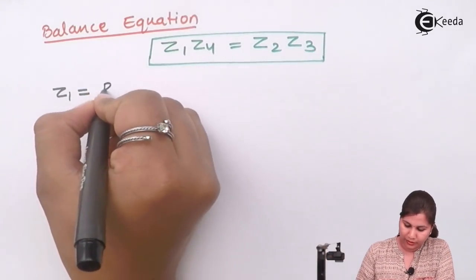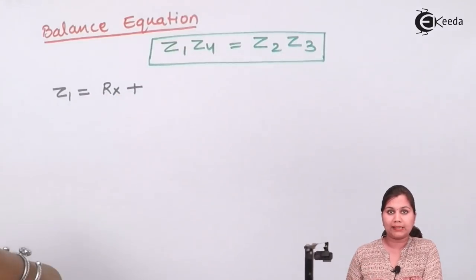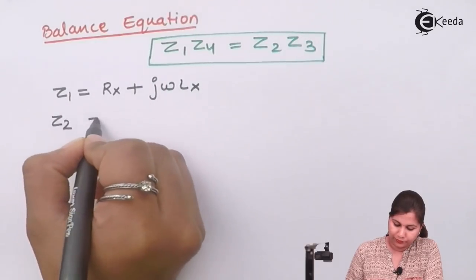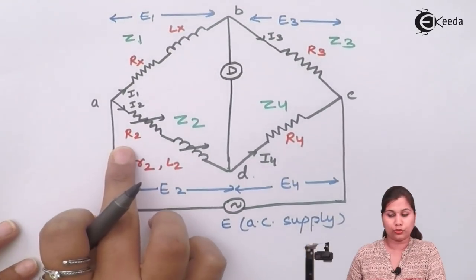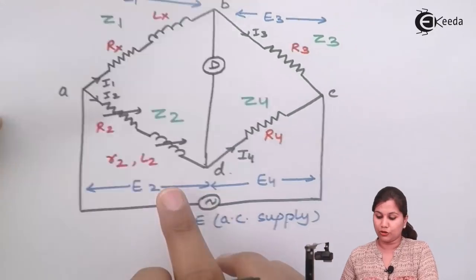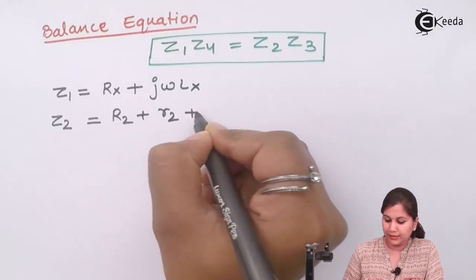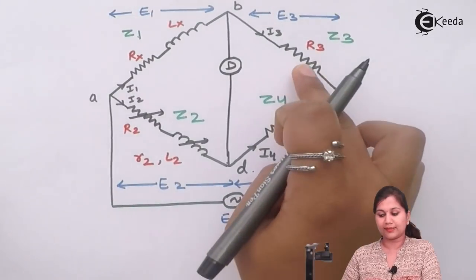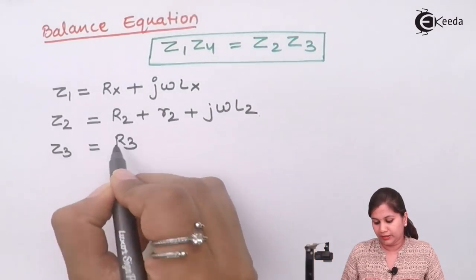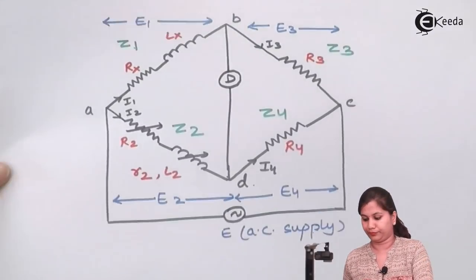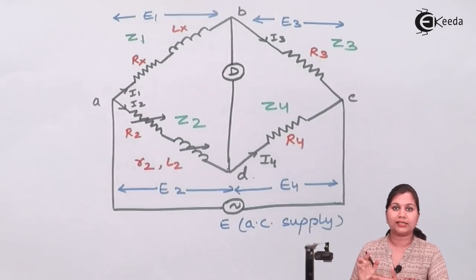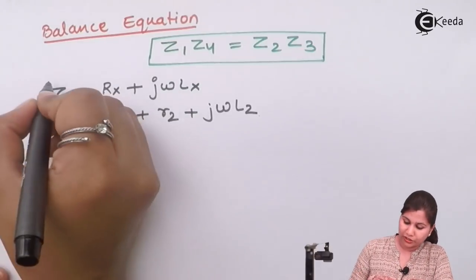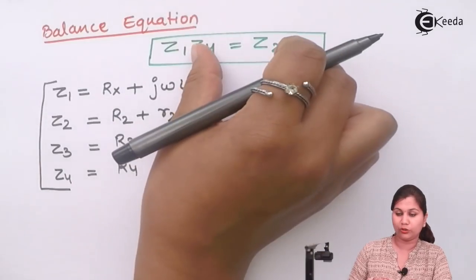Z1 is the impedance in arm AB — a series combination of Rx and Lx — so Z1 = Rx + jωLx. Z2 is the series combination of R2, small r2, and L2, so Z2 = (R2 + r2) + jωL2. Z3 is just resistance R3, so Z3 = R3, and Z4 is just resistance R4, so Z4 = R4. We now put these values into the balance equation.